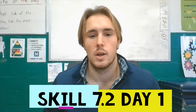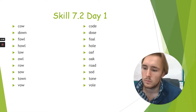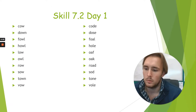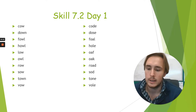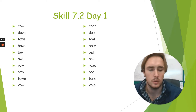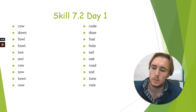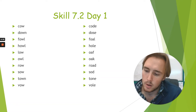Good morning guys, Coach Carson here today with RTI. Today's skill is skill 7.2, vowel teams — two sounds of OW. I want to put you guys on my computer screen so you can understand what we're doing today. Our vowel sounds we're going to be working on are OW. Today we're going to learn, read, and spell words with the short O sound and the OW sound.